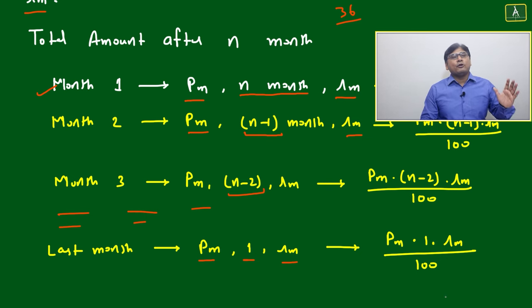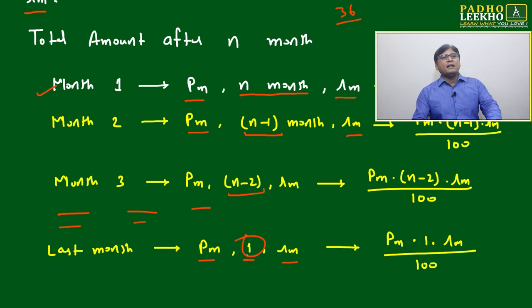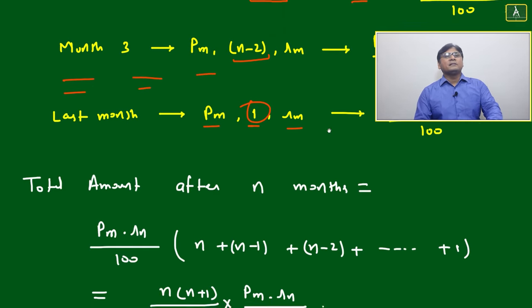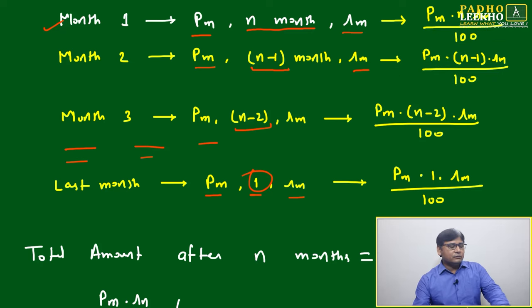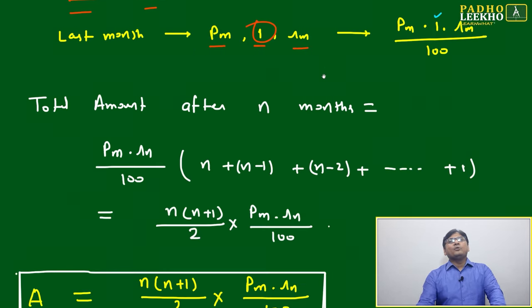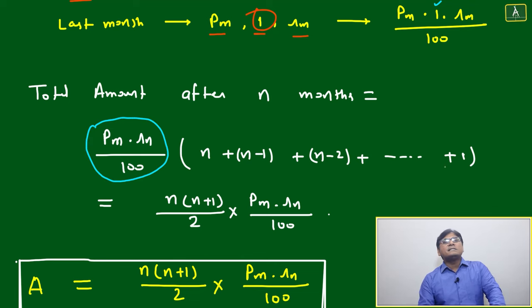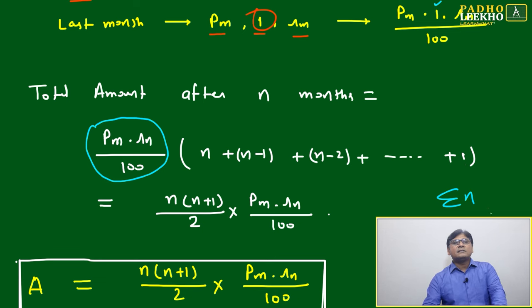From the first month deposit to the last month deposit, the interest periods go from N down to 1. When you add all terms, the common factor is PM × RM / 100. The varying part is the series N + (N−1) + (N−2) + ... + 1.